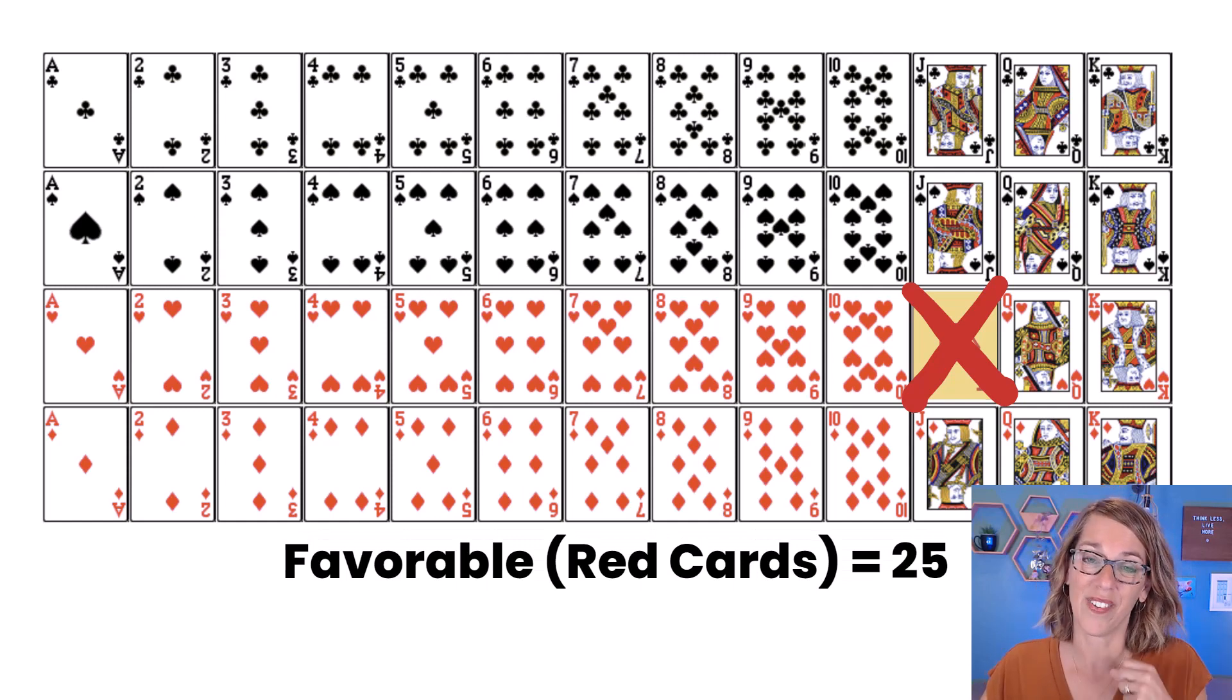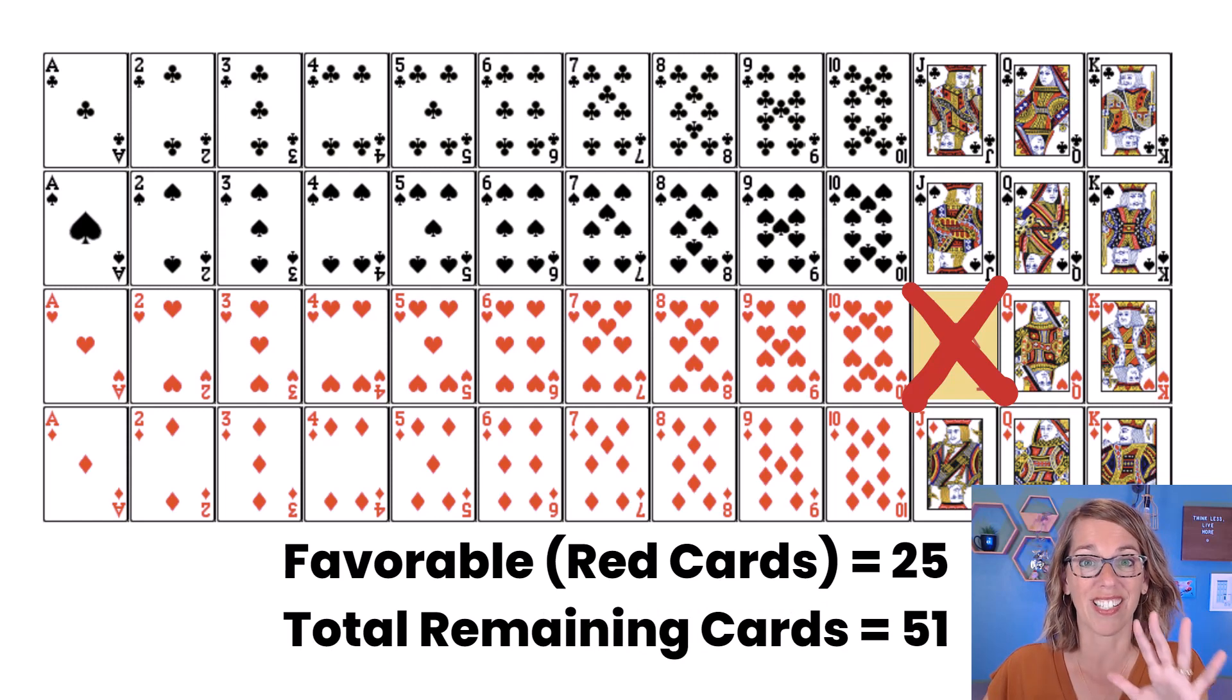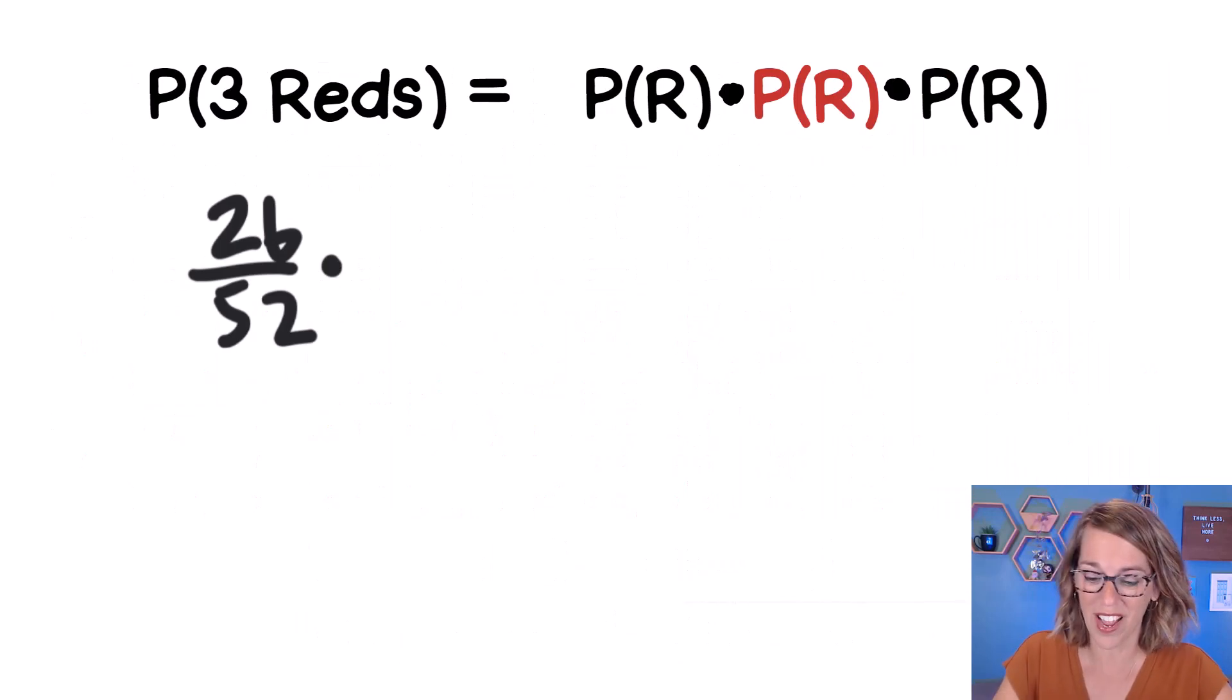Which means that instead of 26, there are 25 red cards remaining. And instead of 52, I only have 51 cards left. This gives us favorable out of total for that second red card. So 25 out of 51.